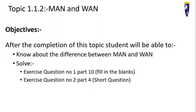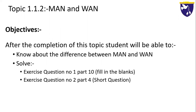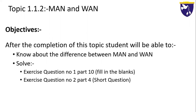Before going further, first of all we must understand why we are learning this topic. The main objective of learning this topic is that when students complete this topic, they will be able to know about the difference between MAN and WAN. The second most important objective is that students will be able to solve question number one from exercise part ten and question number two from exercise part four, which is the short questions. So one fill in the blank and one short question covers this topic.